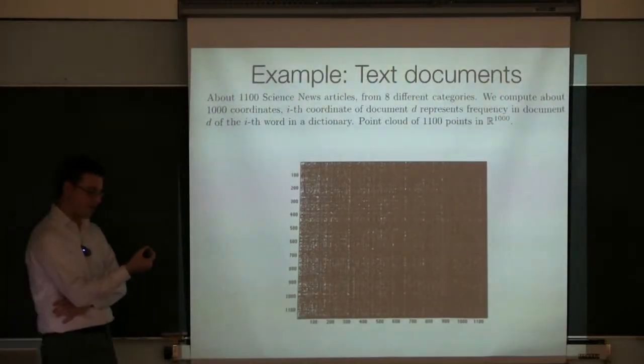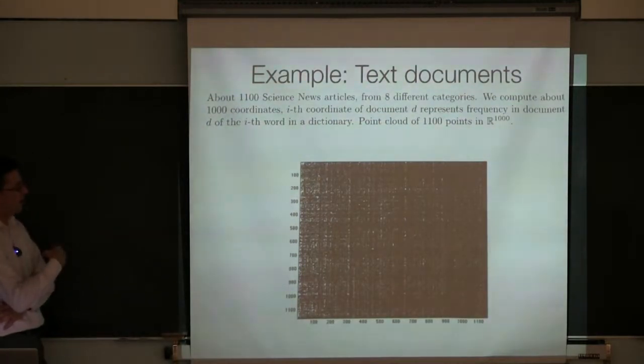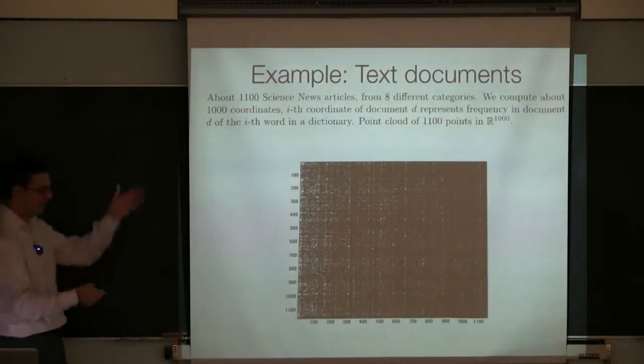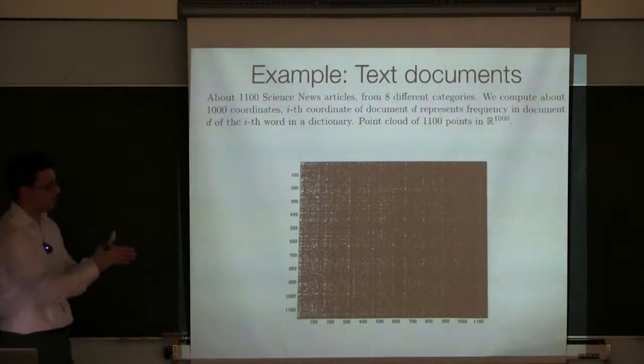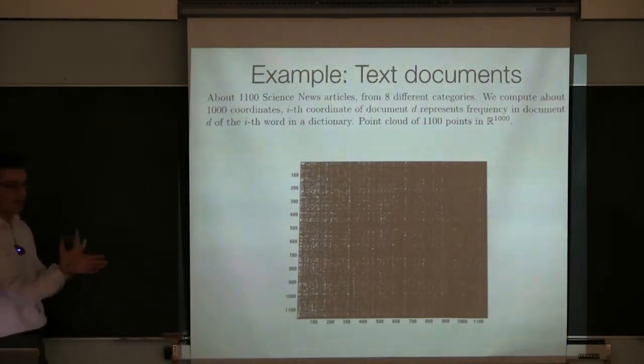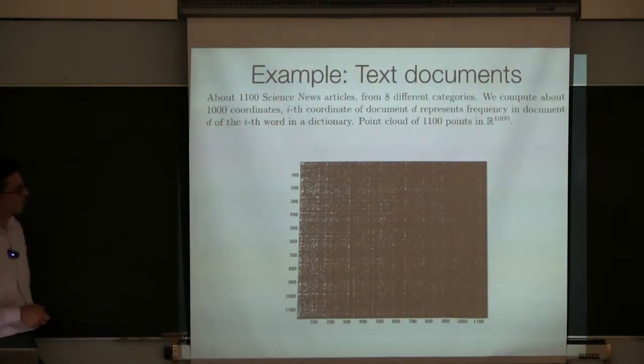We have the k-th entry of this vector is the frequency of the k-th word in a dictionary in the text document. So you look at the text document, you have a dictionary, and the k-th entry in the vector representing the text document is the frequency of the k-th word in the dictionary in the text document.